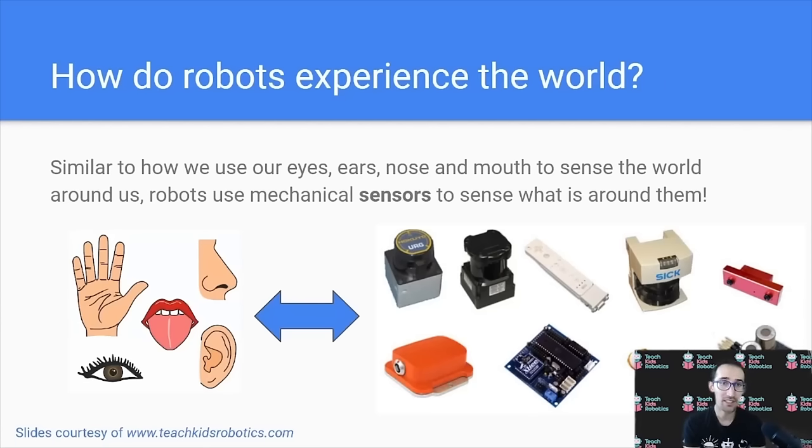The same way humans have eyes and ears and nose and mouth, which allows us to sense specific things about the world around us, robots use mechanical sensors to sense what is around them. Now, there are equivalents here. For example, for an eye, a robot can use a camera. For a mouth, a robot could use a gas sensor.